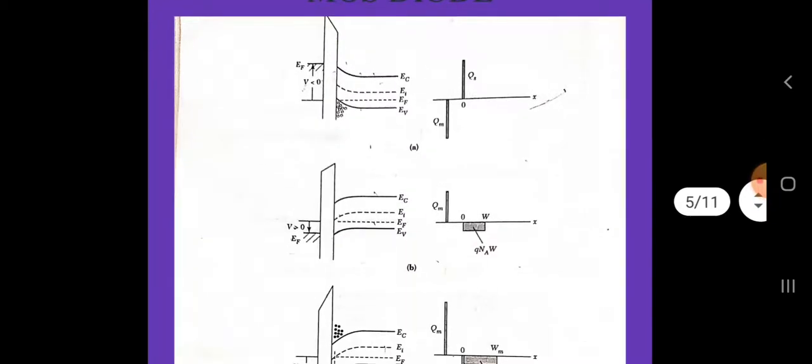The corresponding charge distribution is shown in this diagram, where Qs is the positive charge per unit area in the semiconductor and Qm is the negative charge per unit area; Qm is equal to Qs. When a small positive voltage V greater than zero is applied to an ideal MOS diode, the energy bands near the semiconductor surface are bent upwards and the majority carrier holes are depleted. This is called the depletion case. The space charge per unit area Qsc in the semiconductor is equal to minus qNaW, where W is the width of the surface depletion region.